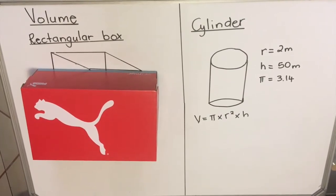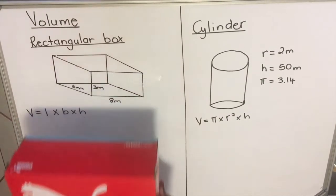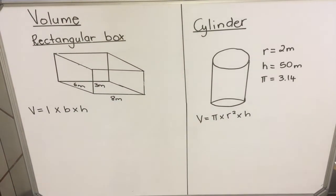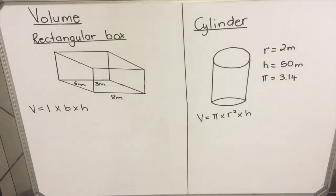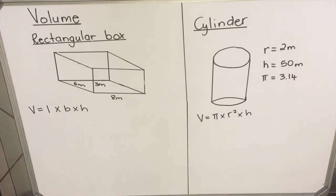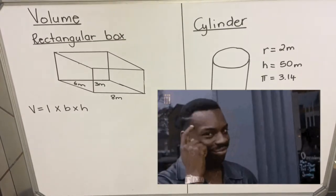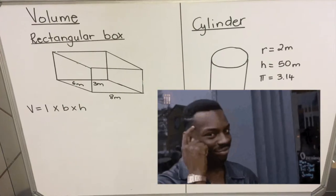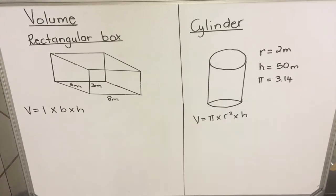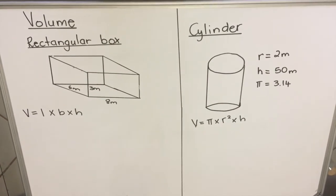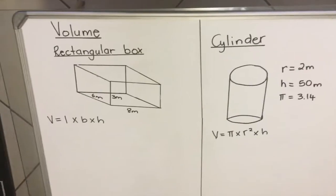So when you calculate the volume, in Math Literacy you will always be given formulas. When you're given a formula in your question paper, they're not just putting it there to be spiteful — use the formula. They expect you to use it and the formula will be guiding you.